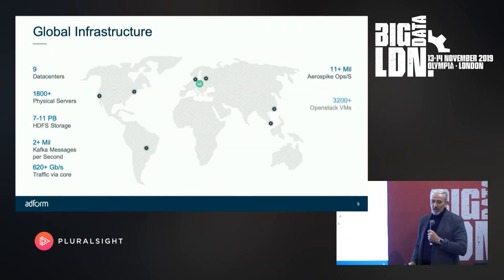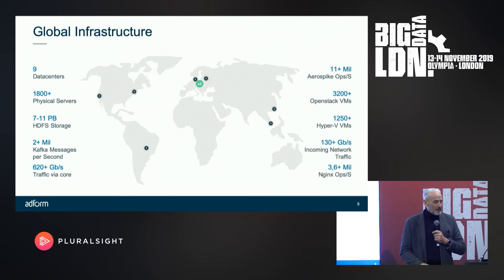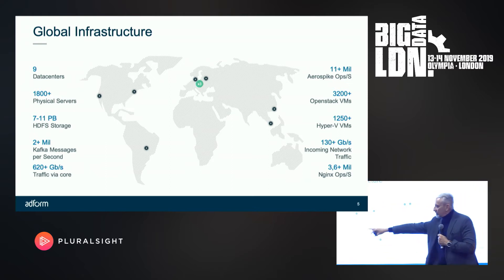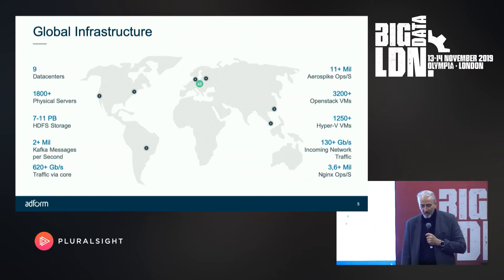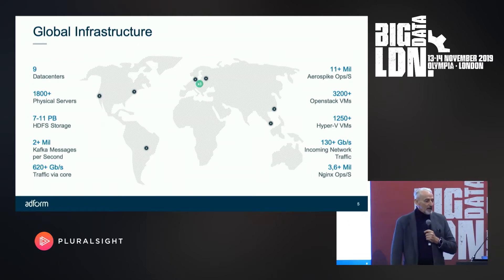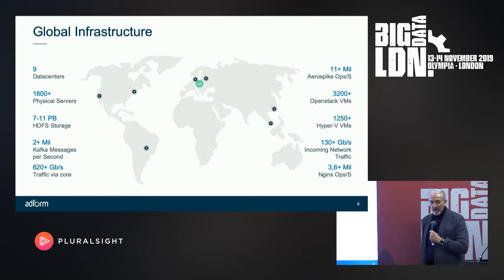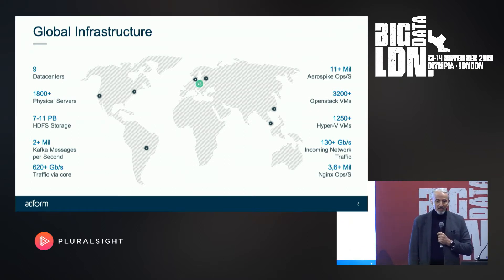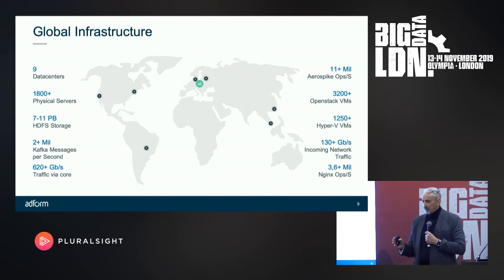As a global infrastructure, as a medium-sized ad tech company, we have nine data centers all over the world — for obvious latency reasons. We have gazillions of real machines, physical servers, petabytes of HDFS storage, many VMs, too many VMs, a large Kubernetes cluster, big Aerospike usage, lots of network bandwidth, and fantastic usage of our NGINX load balancers. So everything we do is big, fast, and high volume.